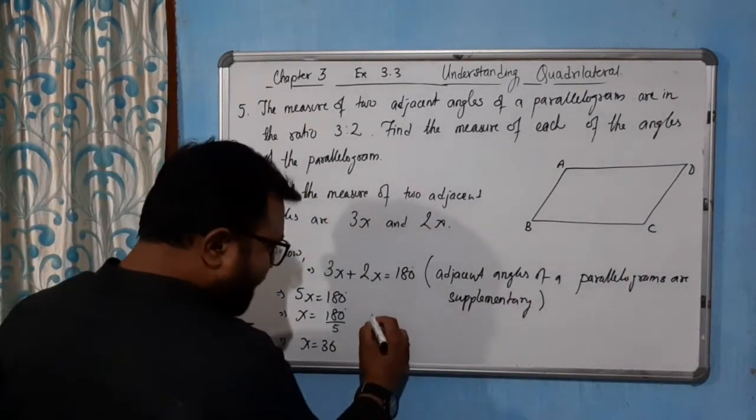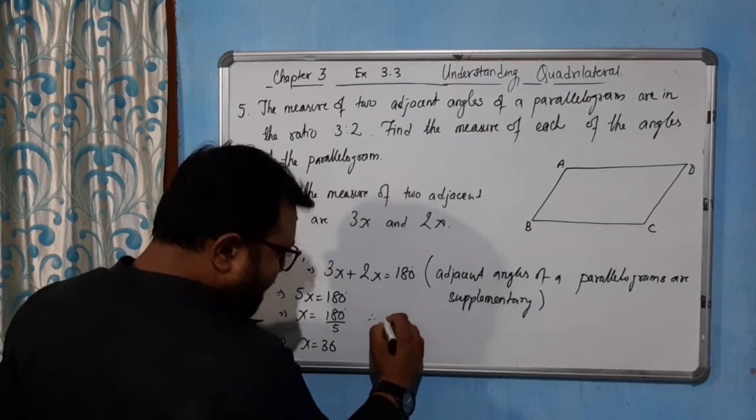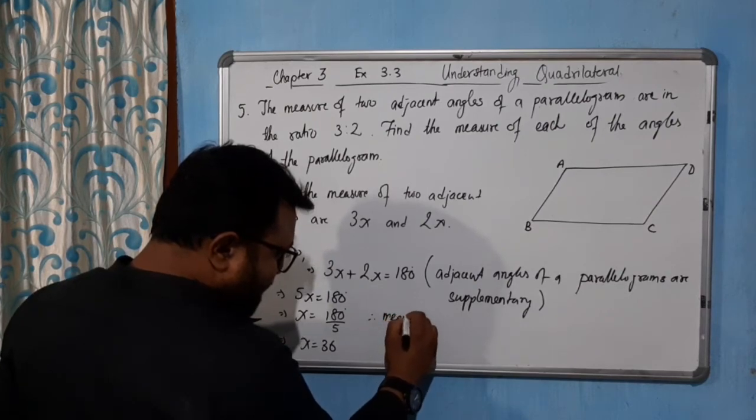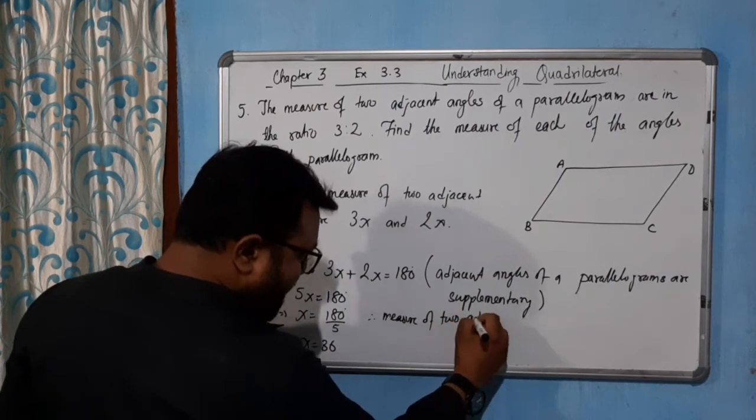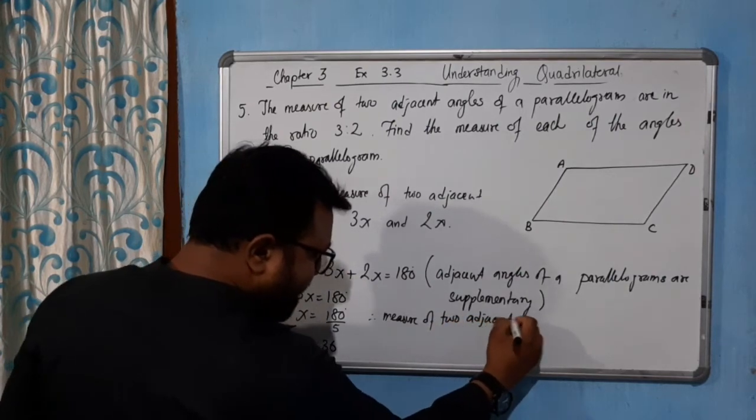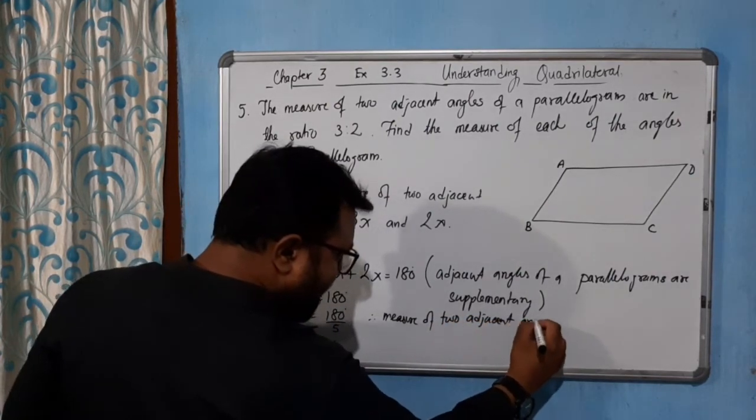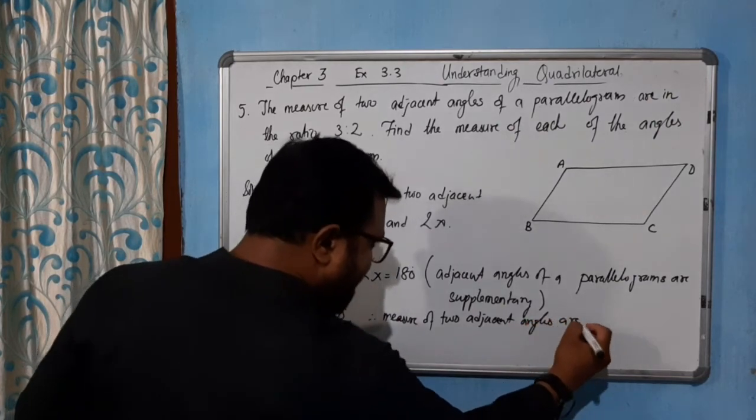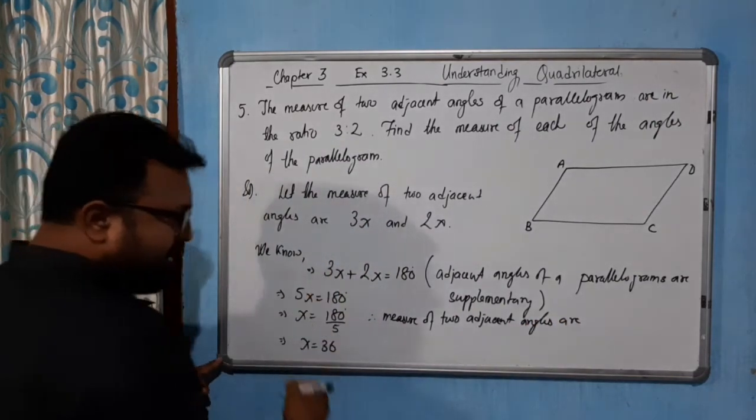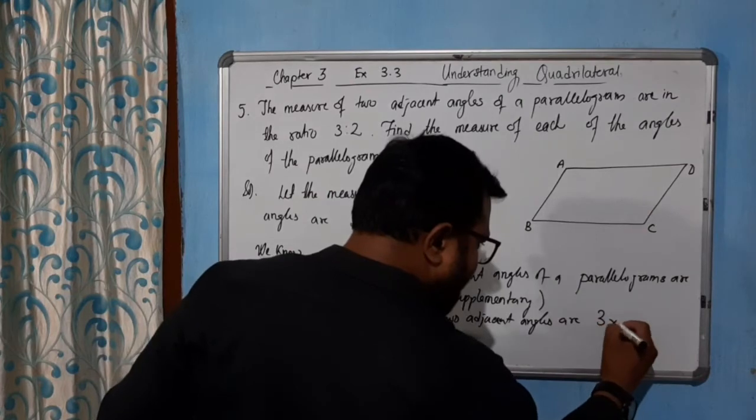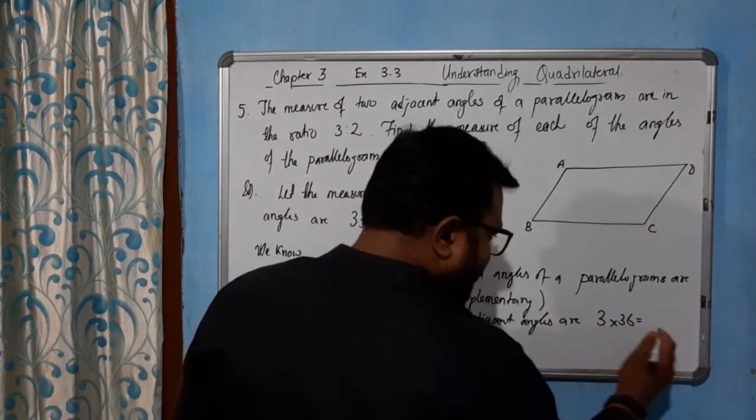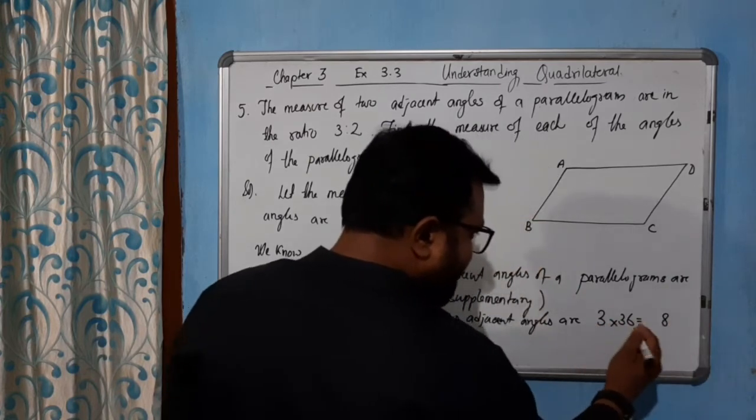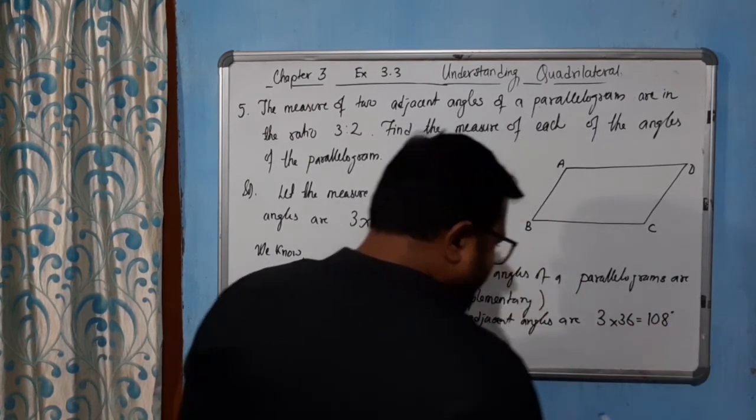Therefore, measure of two adjacent angles are: one is 3 into 36. 3 into 36 equal to how much? 6 times 3 is 18, carry 1, 9 plus 1 is 10. 108 degrees.